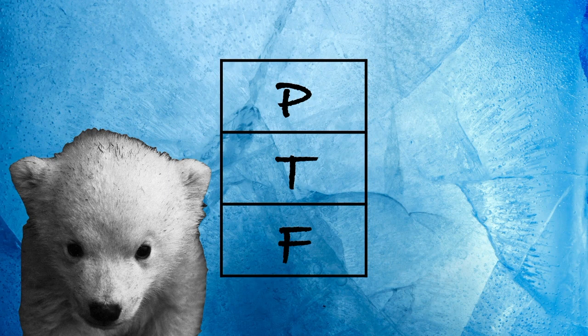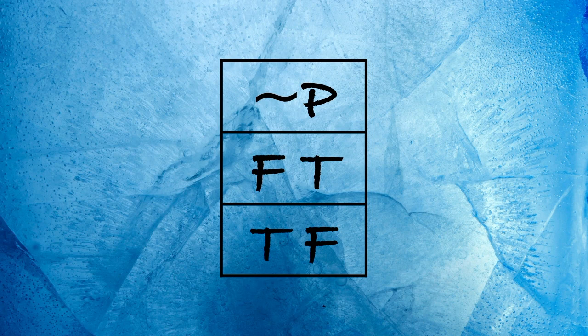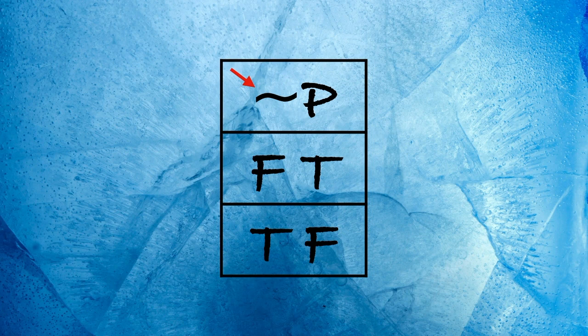Let's go to another simple case: NOT P. Here, we have added a tilde. But look, we don't need more rows. P is either true or false. When P is true, NOT P is false. And when P is false, NOT P is true.